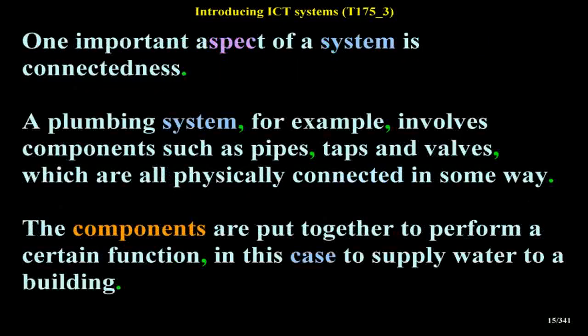One important aspect of a system is connectedness. A plumbing system, for example, involves components such as pipes, taps and valves, which are all physically connected in some way. The components are put together to perform a certain function — in this case to supply water to a building.